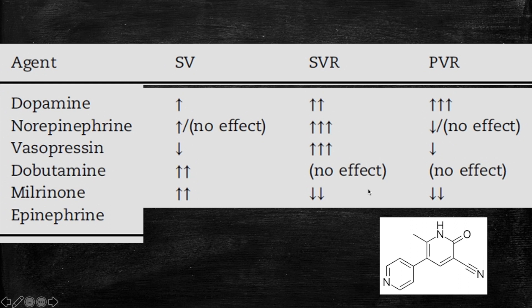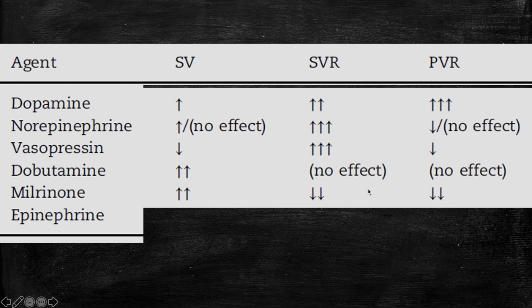Next agent is milrinone, which is phosphodiesterase inhibitor. The main effect of the milrinone is that it will increase your cardiac output by increasing the stroke volume. However, you cannot use it in cases of hypotension. Why? Because it decreases the SVR. It vasodilates and decreases the SVR. So if you have a baby who's hypotensive and you use milrinone, even though you're increasing the stroke volume and the cardiac output, but because the SVR is dropped, the milrinone will worsen the hypotension. So usually people don't use it in cases of hypotension.